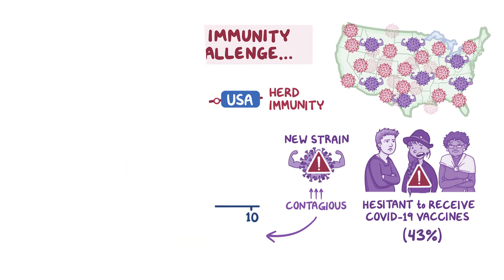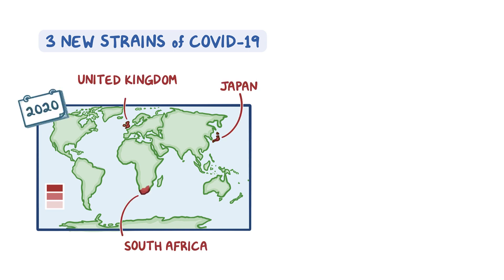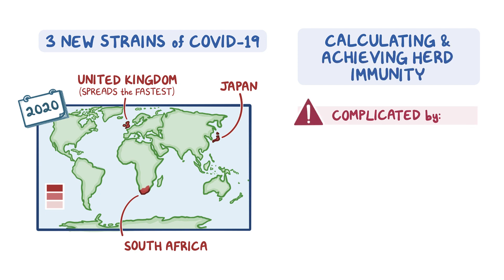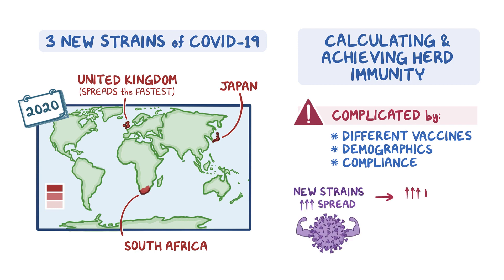As a quick recap, we currently know there are at least three new strains of COVID-19, all first identified in 2020 in the United Kingdom, South Africa, and Japan, and the UK strain can spread the fastest between people. Calculating the percentage of the population which needs to be vaccinated to achieve herd immunity is complicated by a number of factors, including the different vaccines produced, population demographics, and compliance to COVID-19 precautions. If the new strains are all more easily spread, then more people in the population will need to be vaccinated to achieve herd immunity.